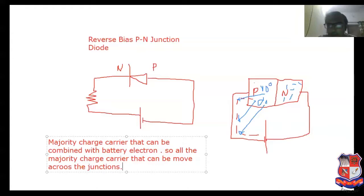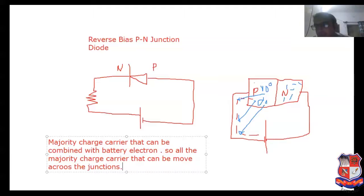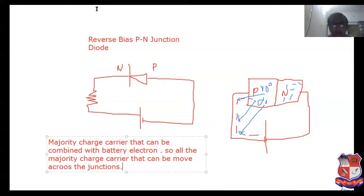It means that the majority charge carrier cannot travel inside the junction. So a large amount of current cannot flow in the circuit. The majority charge carrier goes away from the junction.